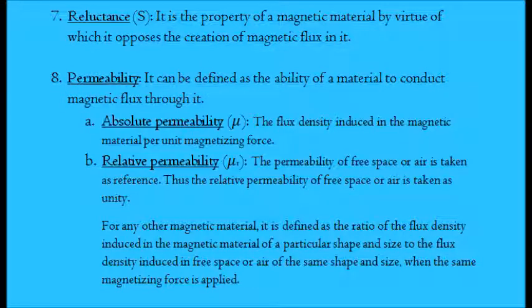7. Reluctance. It is the property of a magnetic material by virtue of which it opposes the creation of magnetic flux in it.